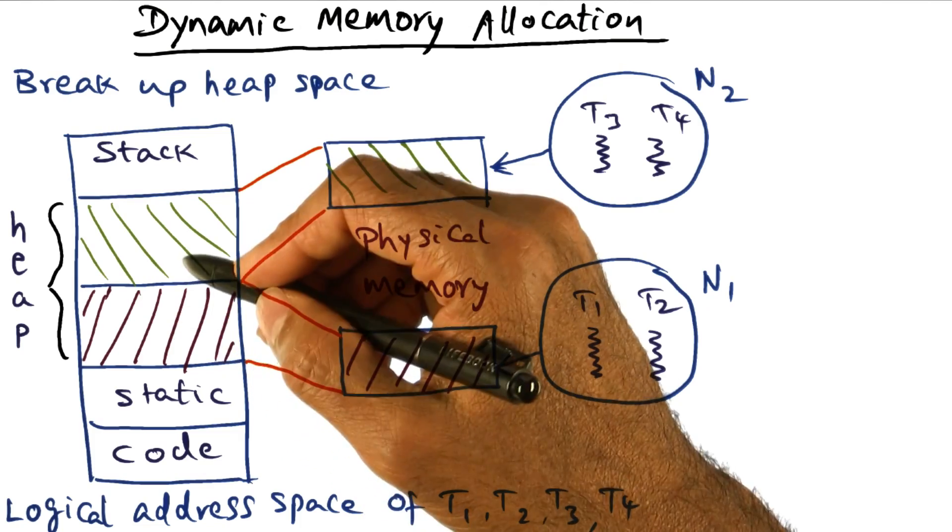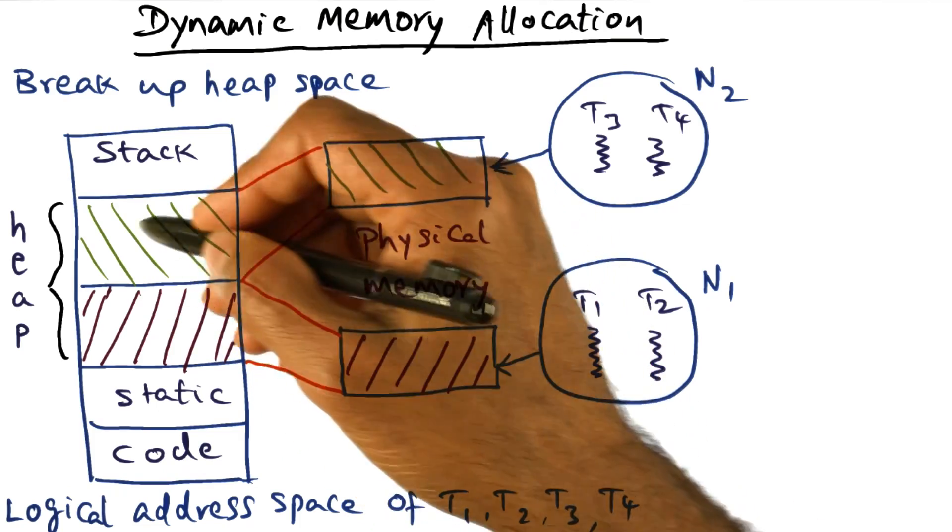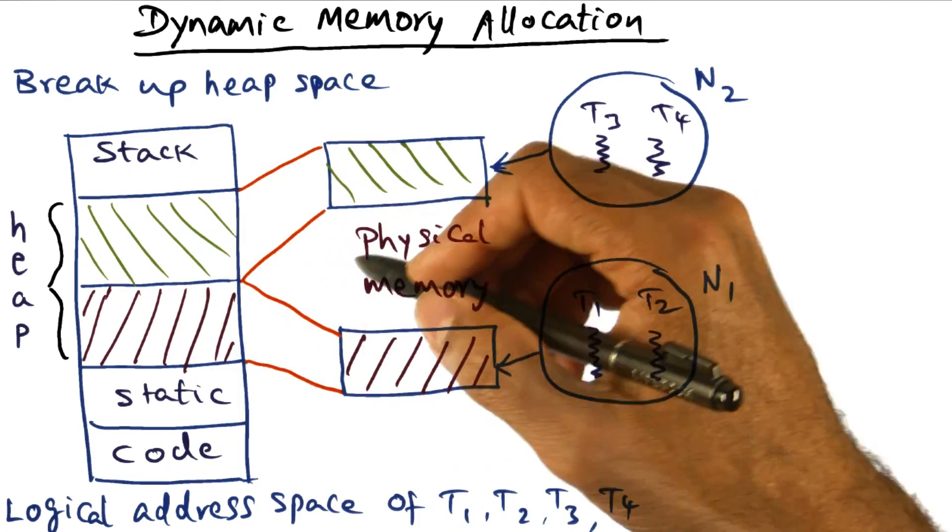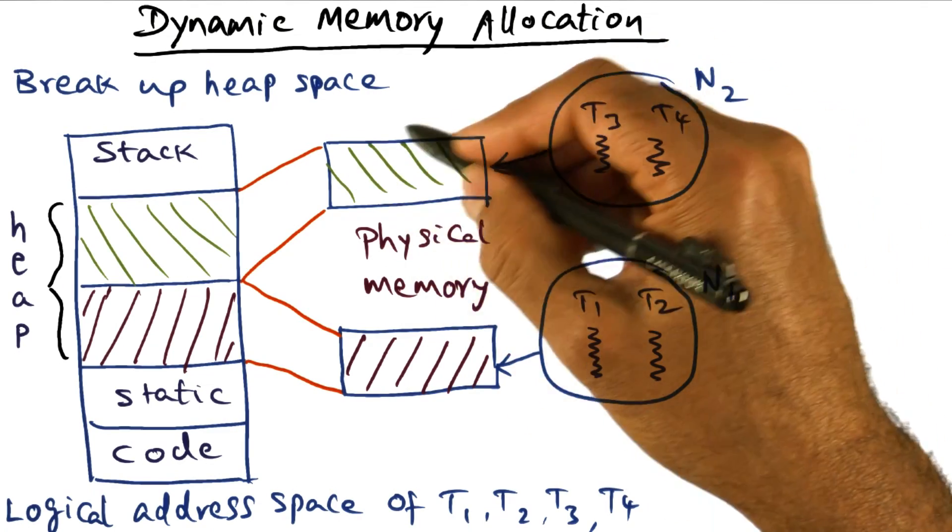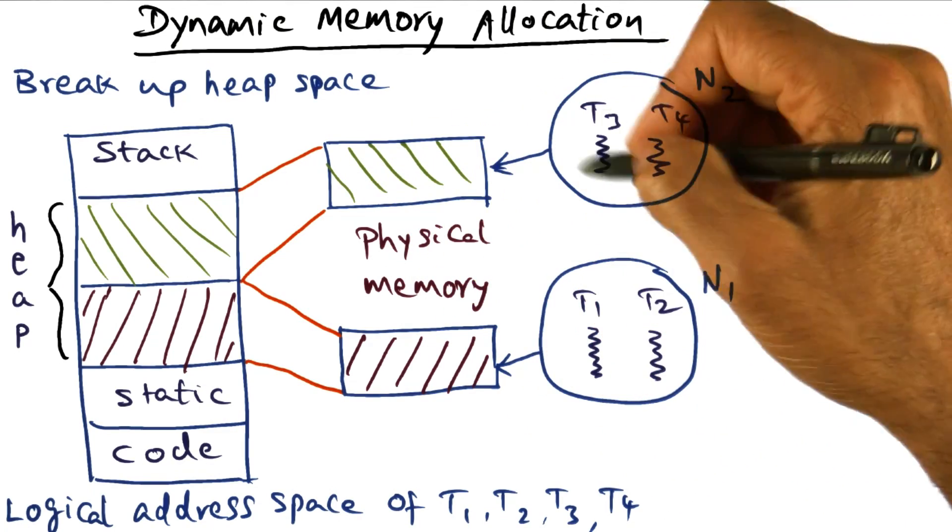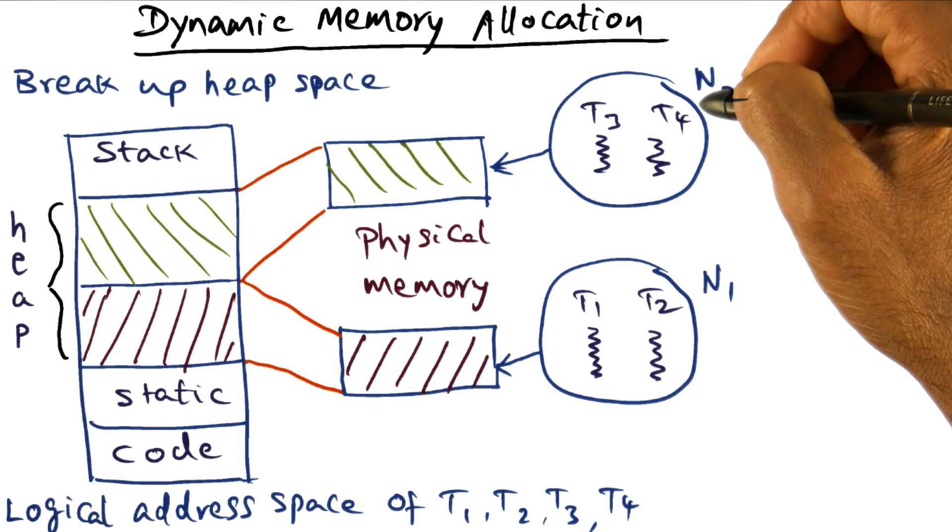everything is shared, but what we're going to do is take this heap portion of the address space and break it up into the portions of physical memories that are associated with the nodes on which these threads are executing.